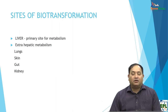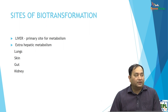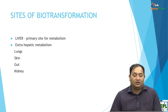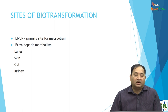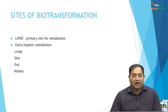Now let us look at the sites of biotransformation. The moment you take any drug orally, it is absorbed and goes to the liver. The liver is the primary site for metabolism. But there are also a number of extra-hepatic metabolic sites, such as the lungs for inhaled substances, the skin, the gut where there is intestinal metabolism, and the kidney. So the primary site is the liver, and the secondary extra-hepatic sites include lungs, skin, gut, intestine, and kidney.